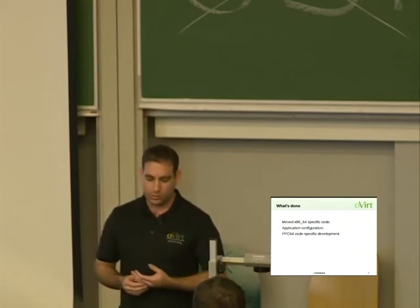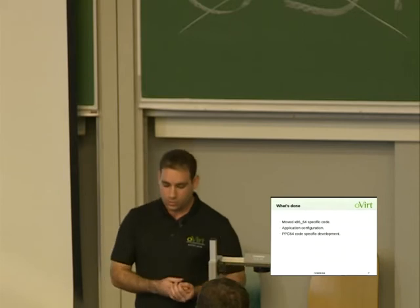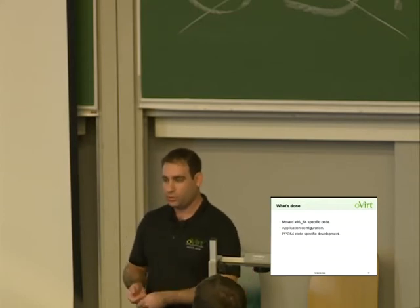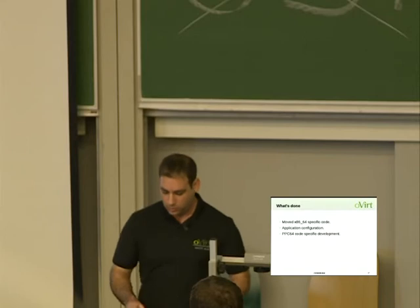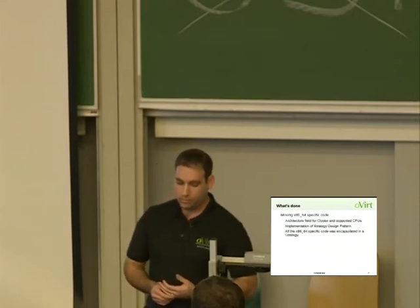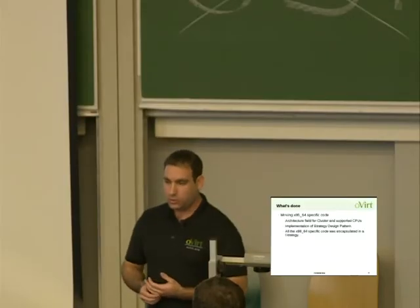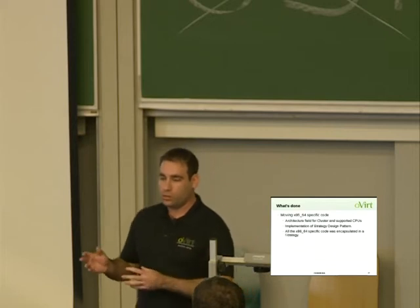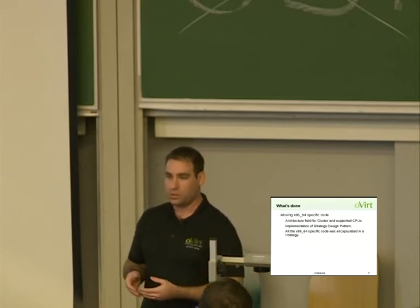What was done can be divided into three main phases. First: identify and move architecture-specific code to the strategy classes. Second: change all the configuration and create new configuration for the new architectures. Third: some specific coding for PPC64. We added the architecture field to the cluster and the supported CPU list, and once we implemented the strategy design pattern, we moved all the specific code to the right place, creating encapsulation for x86-specific code.